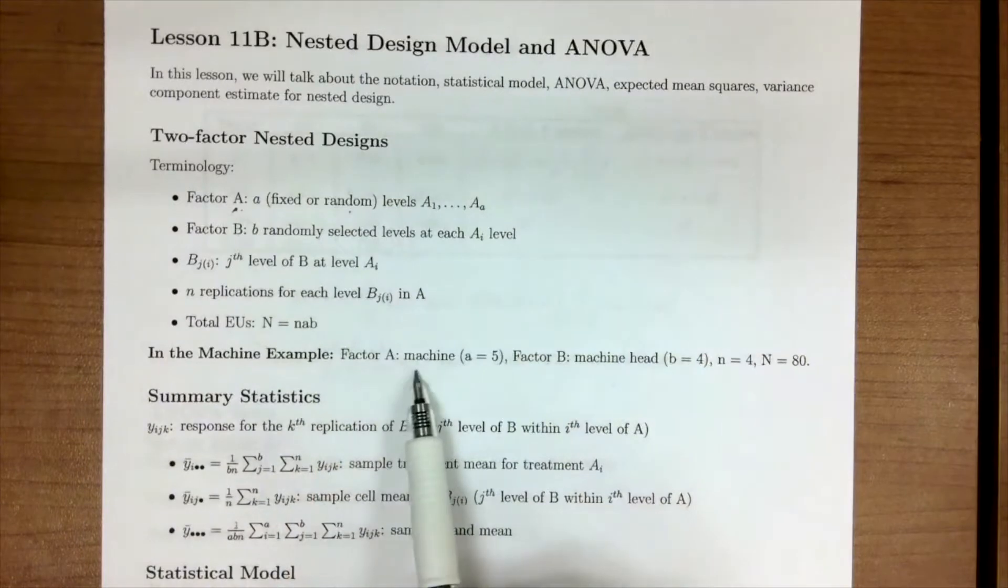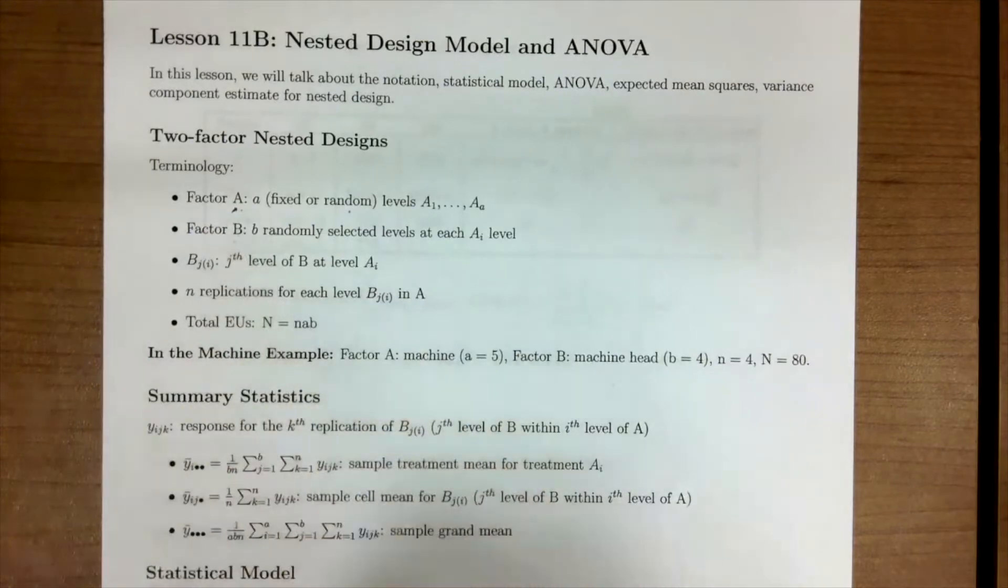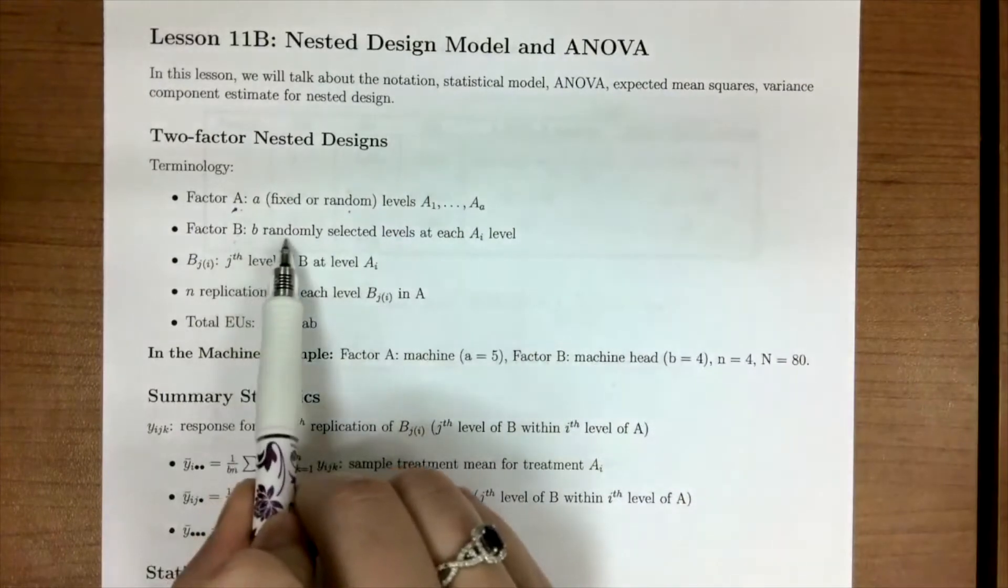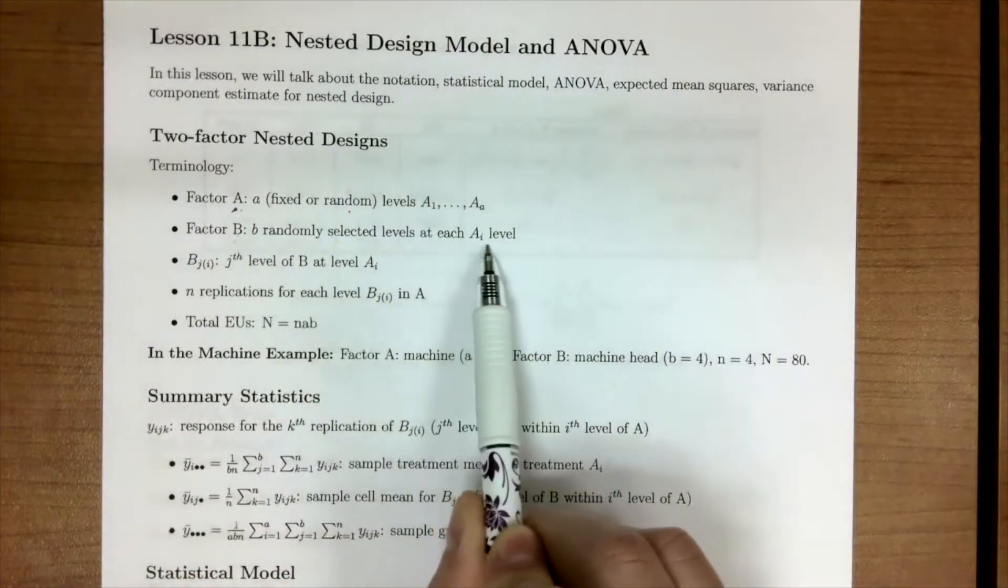In our case, we had five machines, and it was a fixed effect. Then factor B is going to be the nested, or the lower level. And we're going to randomly select B for each of our A_i levels.